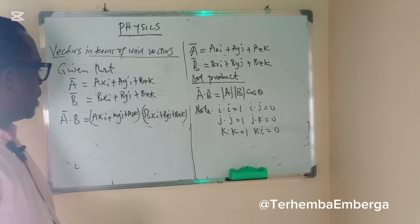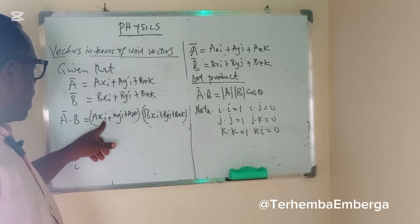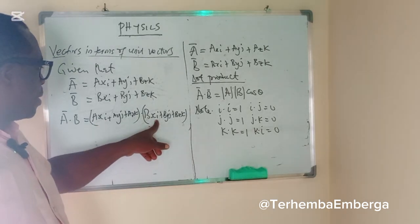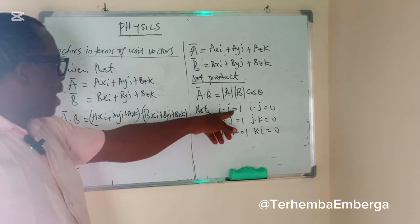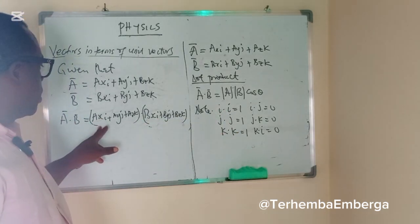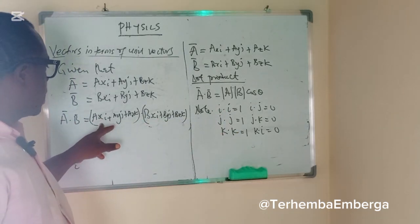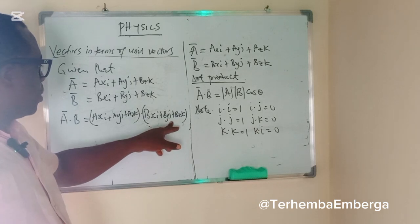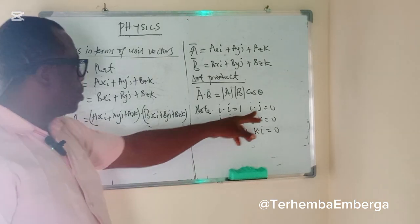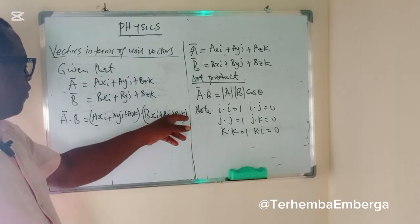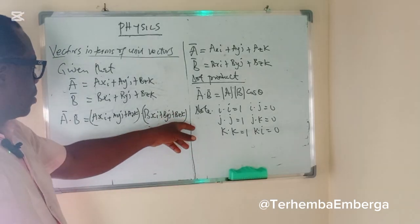By looking at these identities, if I multiply AXI by BXI, I dot I is 1, this stands. If I multiply AXI by BYJ, you know that I dot J is 0, so that quantity will vanish. The same way with this.